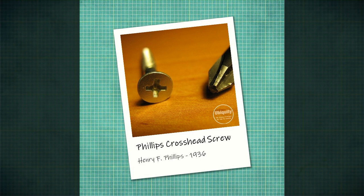Yet it was not until the medieval period that screws for fabrication appeared, using that same force to hold two pieces of material together. These early screws were individually and painstakingly made, and as such were only found in high-value items such as suits of armour or firearms. It would take the advent of industrialisation before screws could be produced with precision at a rate that made them affordable for everyday use. A process for turning screws on a lathe was patented in 1760 by brothers Job and William Wyatt of Staffordshire. Over the next century, processes were improved to come up with the cold-rolling method by which most screws are still produced today.